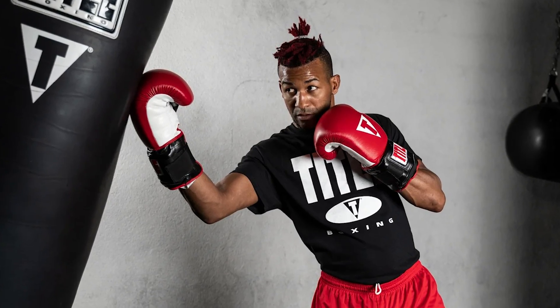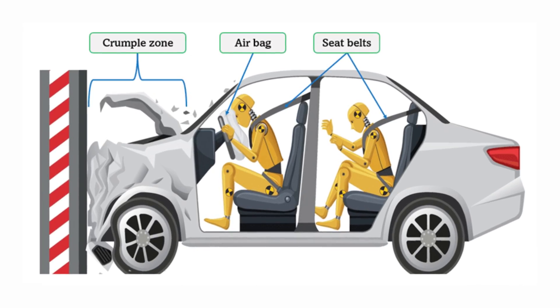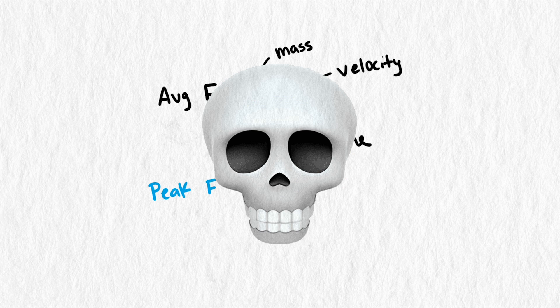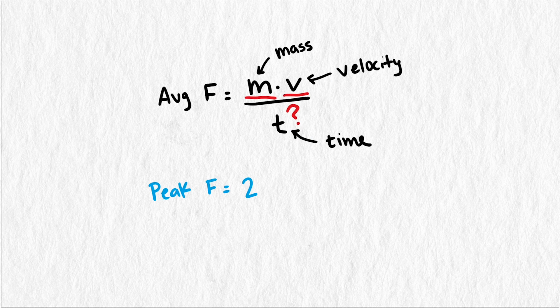This is why boxers wear boxing gloves, or why cars are designed to crumple in collisions instead of being rigid. But we might not want just the average impact force. It could also be useful to look at the peak impact force, as that is the moment that life or death may occur. To get peak impact force, a good rule of thumb is to double the average.